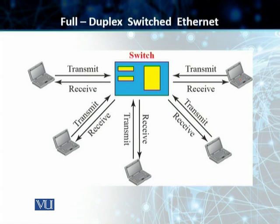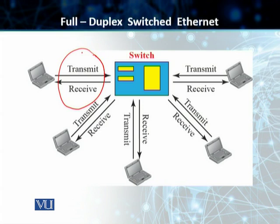That limitation was that the communication was half-duplex. Half-duplex means it was unidirectional — a station could either send or receive, but a station in 10base5 and 10base2 was not able to do both at the same time. We then moved from switched Ethernet to what we call full duplex switched Ethernet, where we have a full duplex link for every single station from the station to the switched Ethernet.